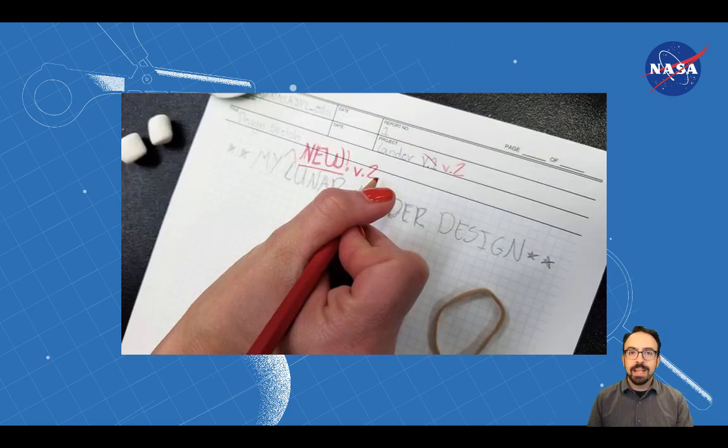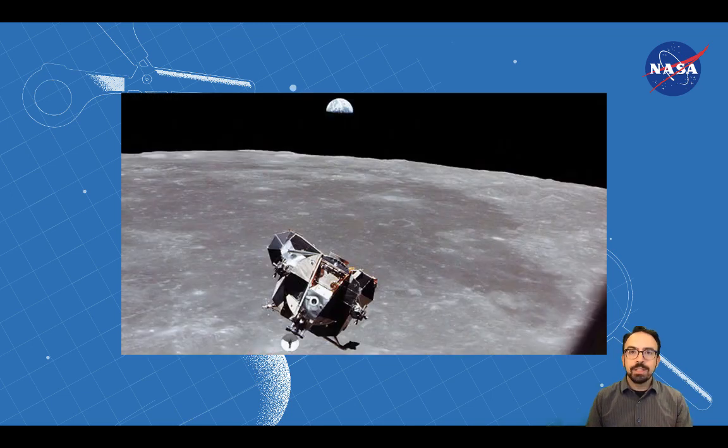Then, depending on how your lander performed, you're going to redesign to try to make it better. See from how high you can safely return your astronauts to Earth. Good luck!